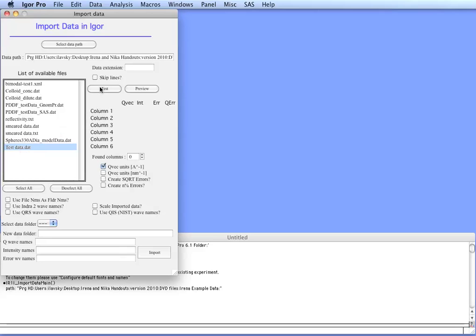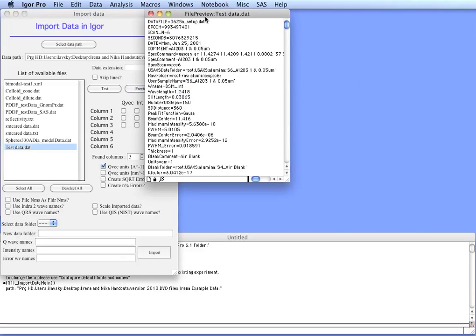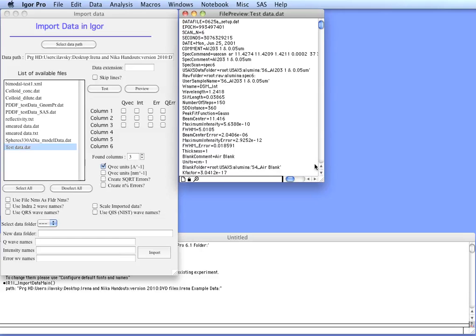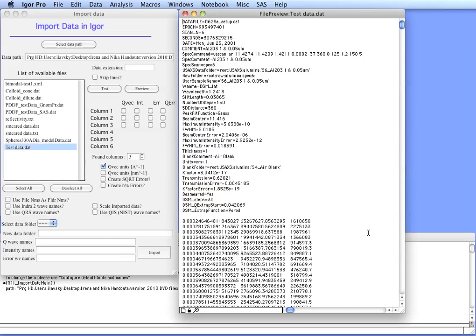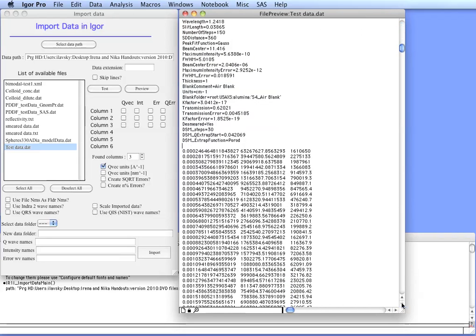If you select it and then hit test, the code will check how many columns of data there are. If you hit preview you can actually see what is there. In this case it's an exported data file from the USAXS instrument, so it has a header containing information. But then it has the thing which really interests us, which is the three columns of data: Q, Intensity, and Error.